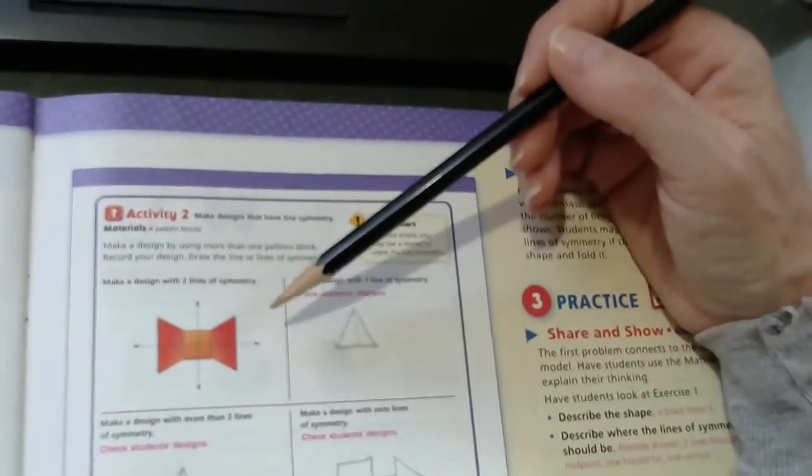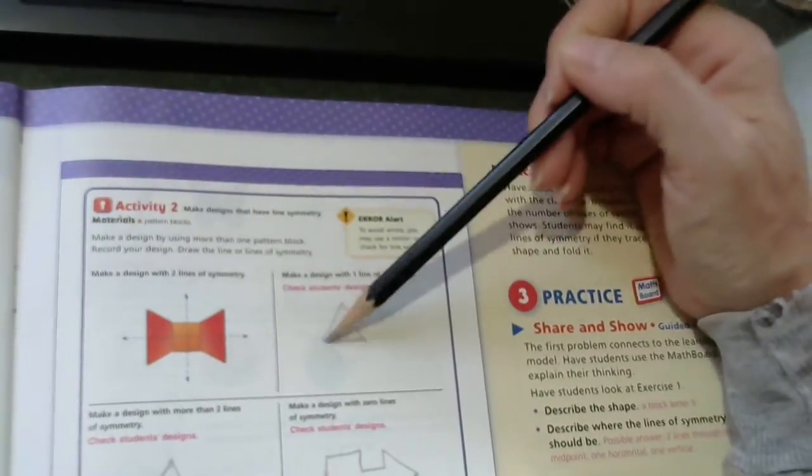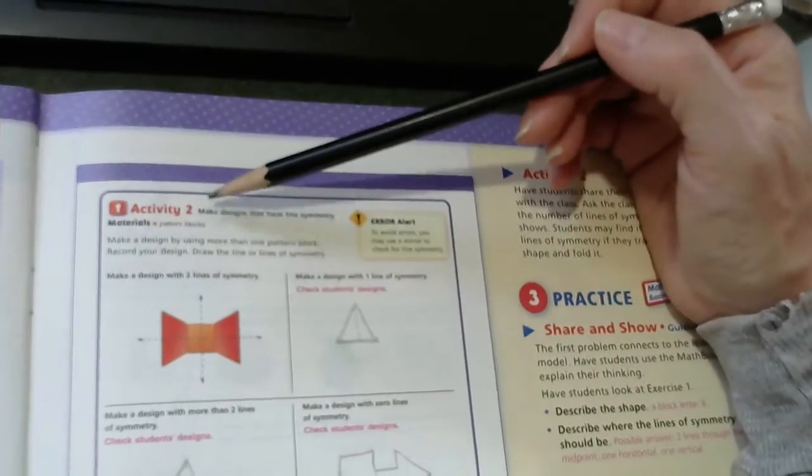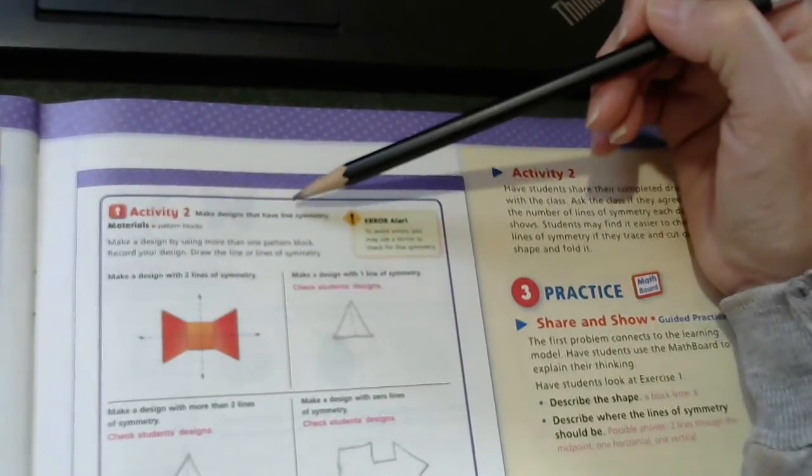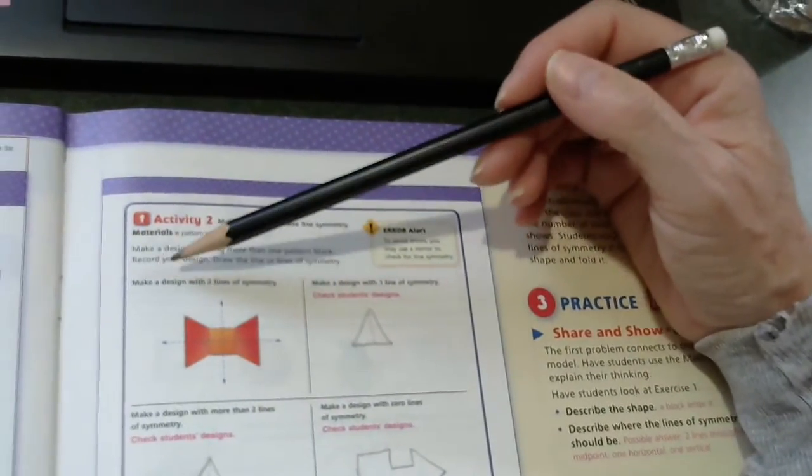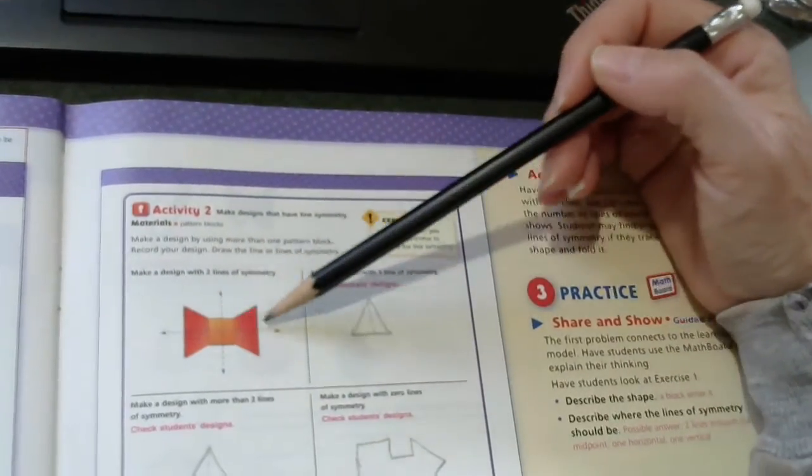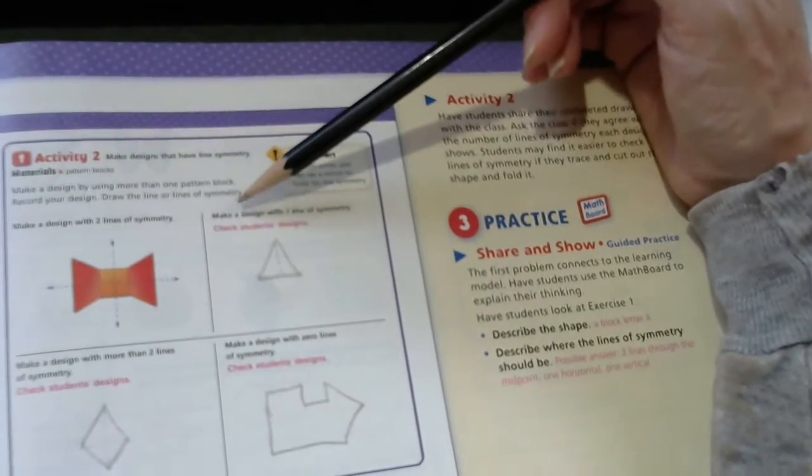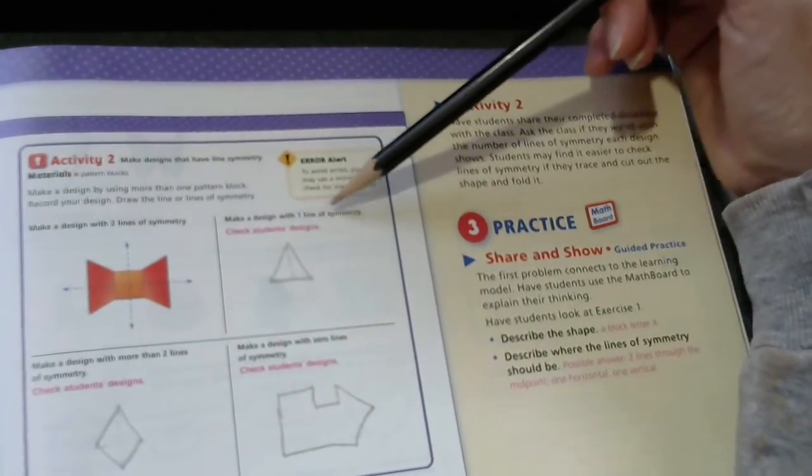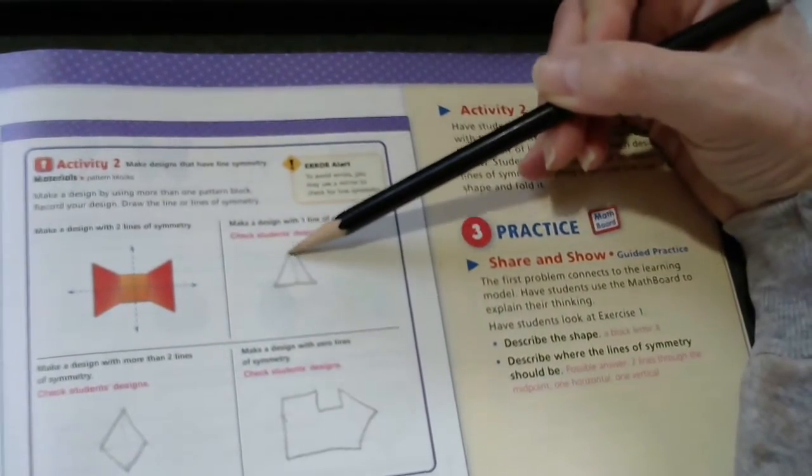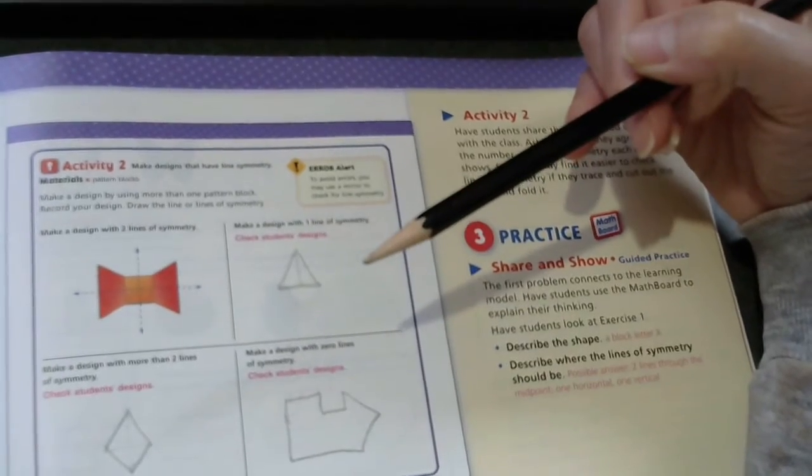Now, on activity two, I did not have pattern blocks, so I drew my figures. It says, make designs that have line of symmetry. Make a design with two lines of symmetry. So, they did the first one for you. Then the next one says, make a design with one line of symmetry. And I did one triangle with one line of symmetry.